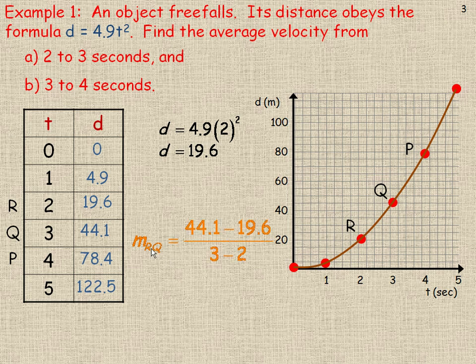Now we're going to use the slope formula to find the average rate of change between 2 and 3 seconds, or points R and Q. So we would subtract 44.1 and 19.6—that's the distance coordinates—divided by the difference between the time coordinates, 3 and 2. And if we evaluate that, we get 24.5. Now the units would be meters per second, because the units of distance are meters and the units for time are seconds.